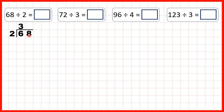So now we can move on to our ones digit. 8 divided by 2 is 4, because 4 times 2 is 8, so our answer is 34.